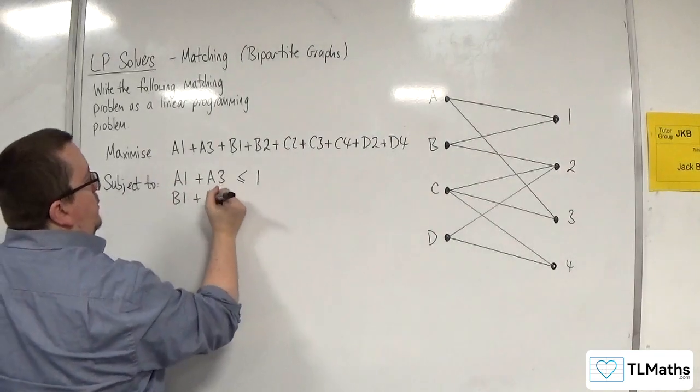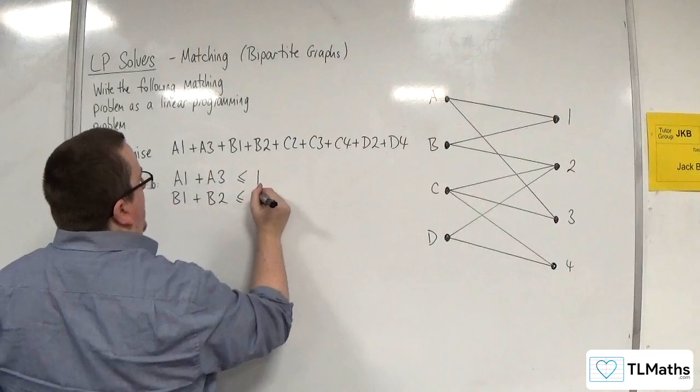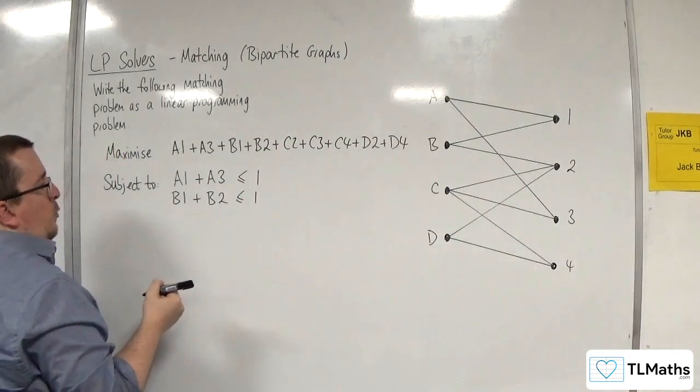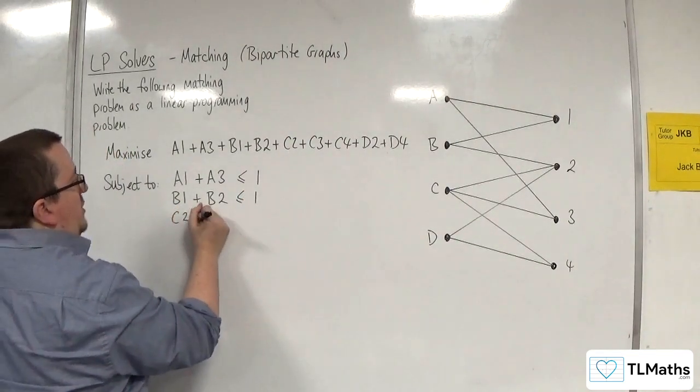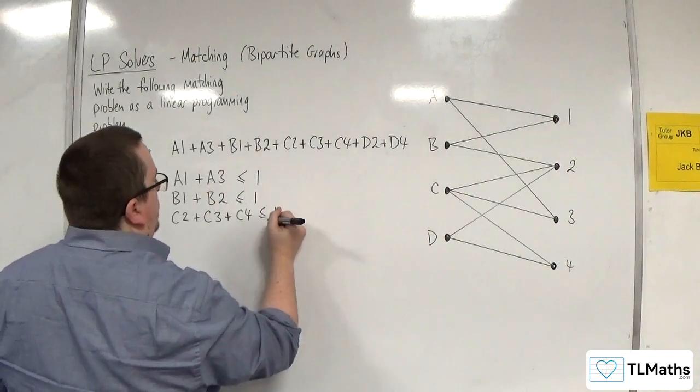We're going to need worker B. We can either do B1 or B2, and that's got to be less than or equal to 1. For worker C, C2 plus C3 plus C4 has got to be less than or equal to 1.